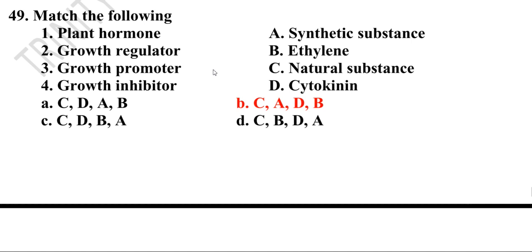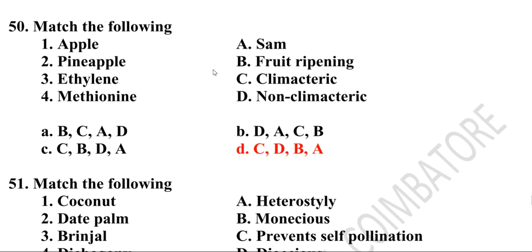Forty-ninth question: Match the following — plant hormone is a natural substance; growth regulator is a synthetic substance; growth promoter — cytokinin; growth inhibitor — ethylene. Option B is the correct answer. Fiftieth question: Apple is climactic; pineapple is non-climactic. Ethylene is the fruit ripening hormone and is a gaseous hormone. Methionine and SAM are involved in its biosynthesis. Option D is the correct answer.